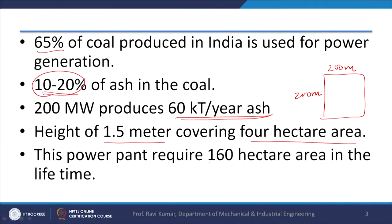The life of thermal power plants is approximately 40 years on average. So, 160 hectares will be required during the lifetime of the plant. It is quite a large area required for ash. Nowadays, there is a thinking over how to make best use of ash produced in thermal power plants.